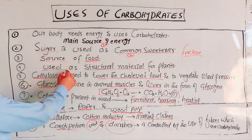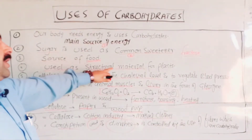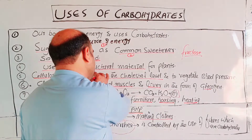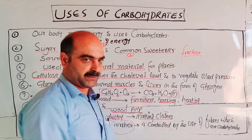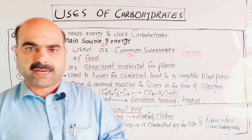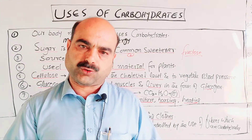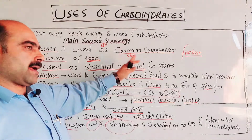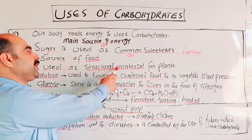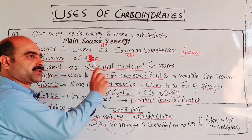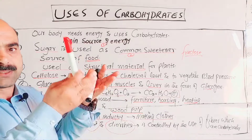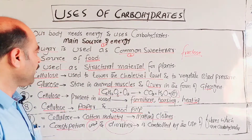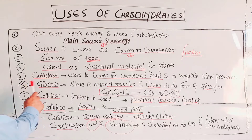Fourth: carbohydrates are used as structural material in plants. About 80% of the plant body is made of carbohydrates, which serve as structural material giving plants their size and structure. Cellulose is a key example.